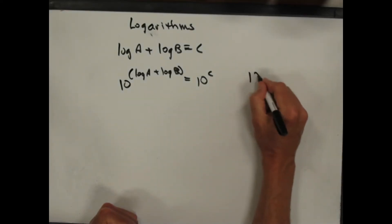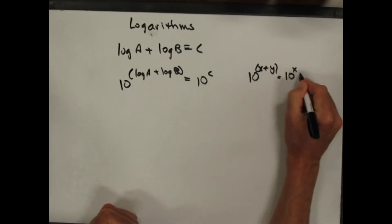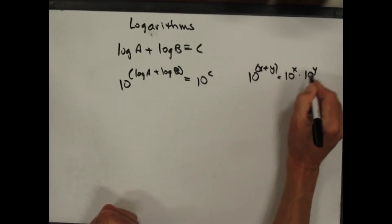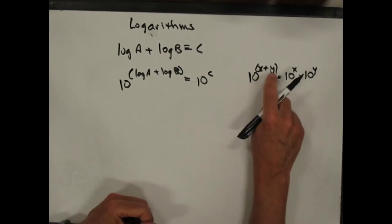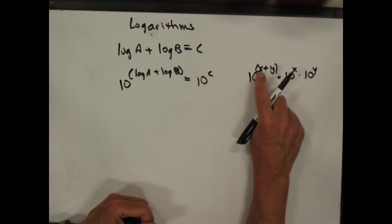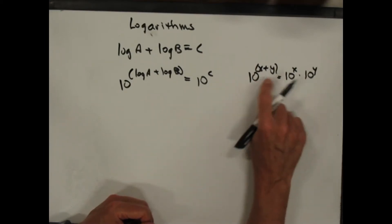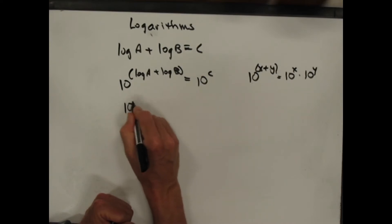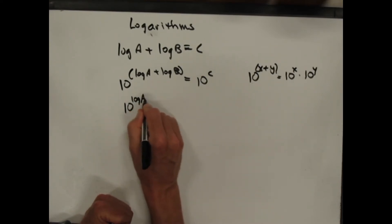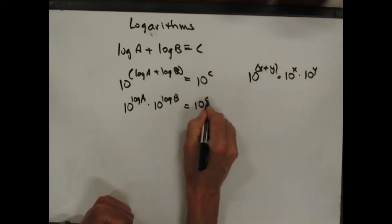Now, you may remember that 10 to the x plus y is equal to 10 to the x times 10 to the y — that's a rule for exponents. For example, 10 to the 2 plus 1 is 10 to the 3, which is 1,000. It's the same as 10 to the 2 times 10 to the 1, which is 100 times 10. And so I can write 10 to the log a times 10 to the log b equals 10 to the c.